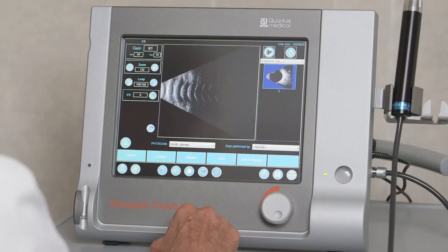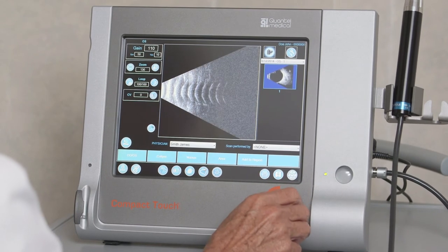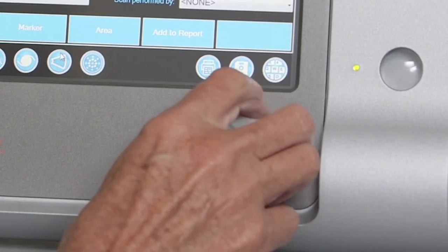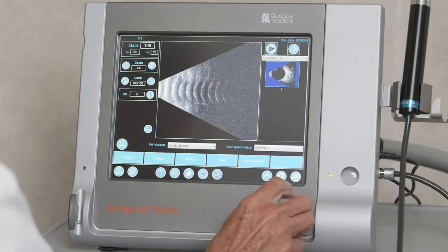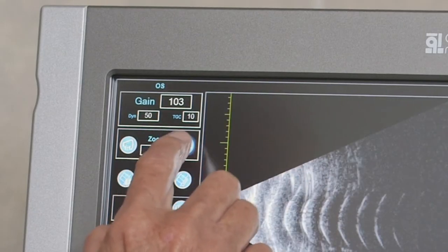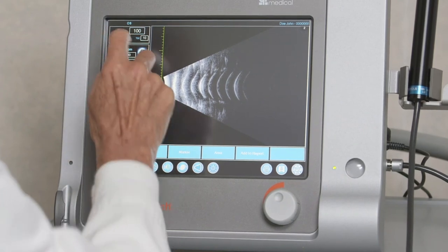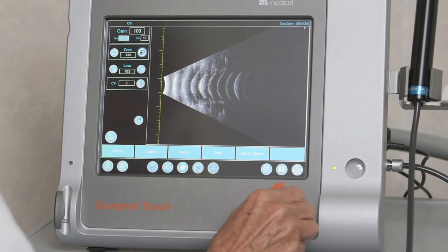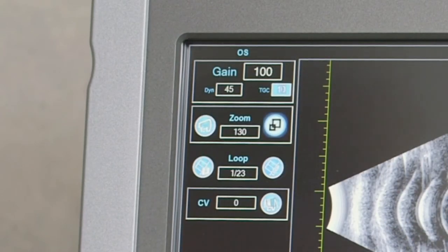Selecting the B-scan icon activates the B-scan function. To the left of the image area is the parameter field, where gain, dynamic, TGC, and zoom are shown and can be modified by touching each field and using the grey knob or the virtual keyboard. Selecting the full screen icon on the right side of the zoom field allows the examiner to view an image in full screen mode. Parameters such as gain and TGC can be adjusted by turning the front knob or by clicking in the gain field and using the scroll wheel.